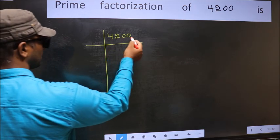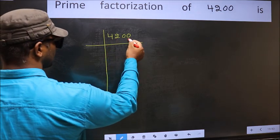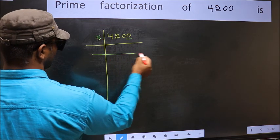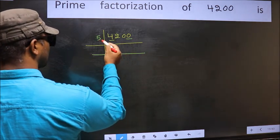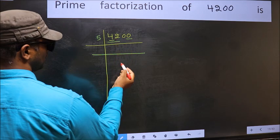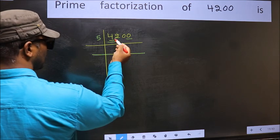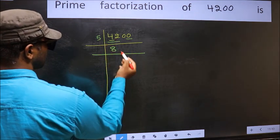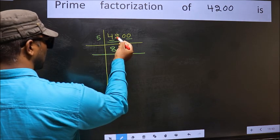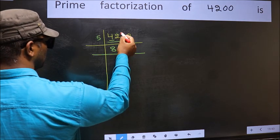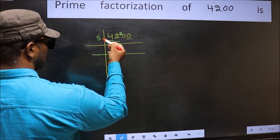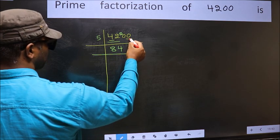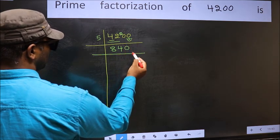In this number, the last digit is 0, so take 5. First number 4 is smaller than 5, so take 2 numbers: 42. A number close to 42 in the 5 times table is 5 eights = 40. 42 minus 40 = 2, carried forward: 20. When do we get 20 in the 5 table? 5 fours = 20. This 0 comes down.